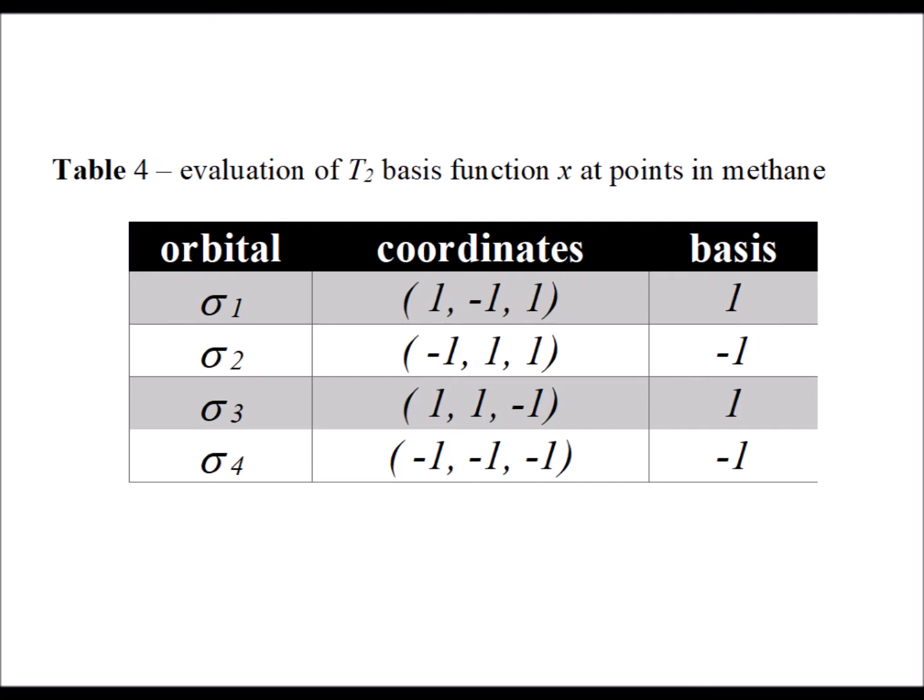Next, we try one of the basis functions of the triply degenerate irreducible representation, T2. We look at the basis function x. To evaluate that function, we just simply take the x coordinate for each of the hydrogen 1s orbitals, sigma 1 through sigma 4, in the molecule. We see that they are not all 0. None of them is equal to 0. Therefore, we know that the T2 irreducible representation is included as well in our delta 4 reducible representation.